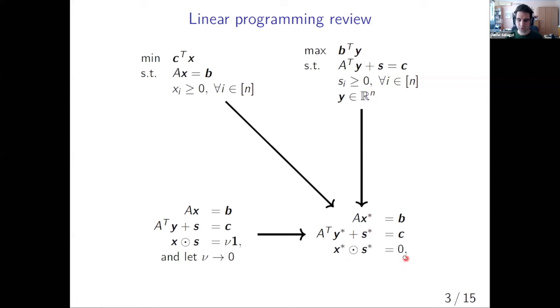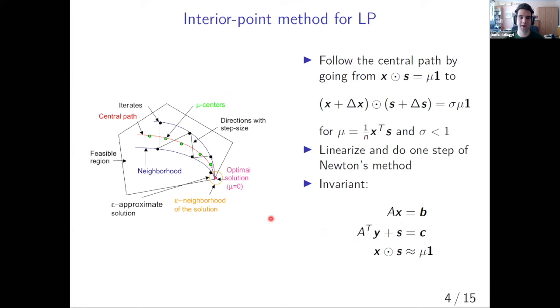So instead, what we do is that we start from an initial solution, which has this element-wise product of x and s equal to one, and then we slowly reduce this constant until we reach the situation where their element-wise product is close to zero. These x, y, and s trace a curve as we change our parameter nu, and this curve is called the central path. These algorithms that follow the central path, they're called the interior point methods. Why? Because during the entirety of the algorithm, we are moving in the interior of our feasible region. And only at the end, we are converging slowly to the optimal that lies on the boundary of this feasible region.